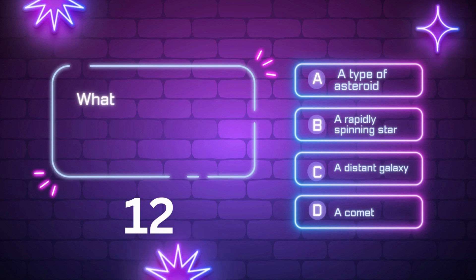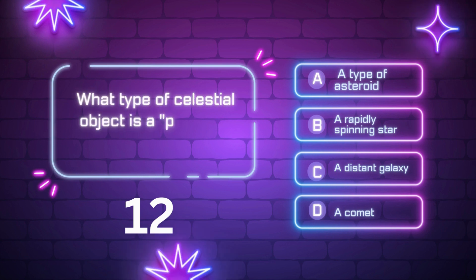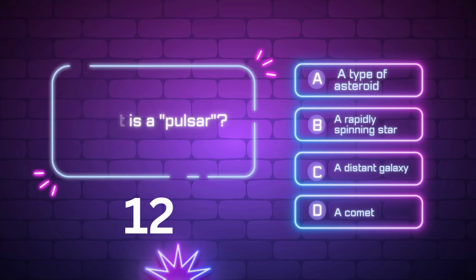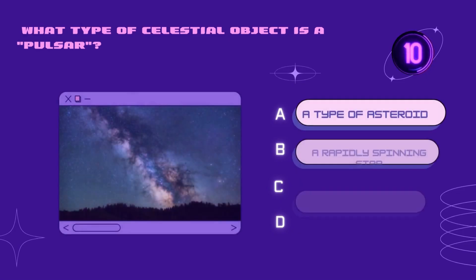What type of celestial object is a pulsar? A type of asteroid, a rapidly spinning star, a distant galaxy, a comet. Your time starts now.